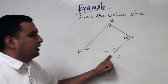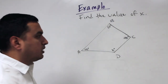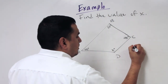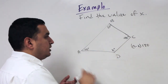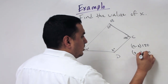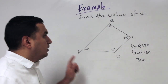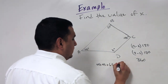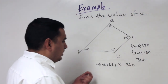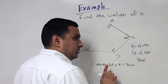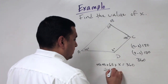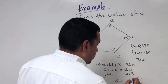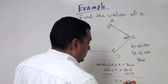Find the missing angle in a quadrilateral. The interior angles of a quadrilateral sum to 360°, so (4−2) times 180 equals 360. Set up the equation: 95 plus 65 plus x plus 45 must equal 360. Adding 45, 95, and 65 gives 205. Subtracting 205 from 360 gives x equals 155 degrees.